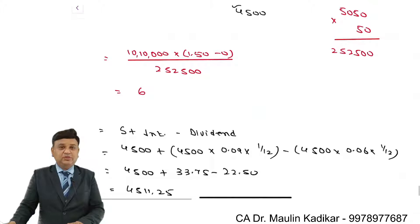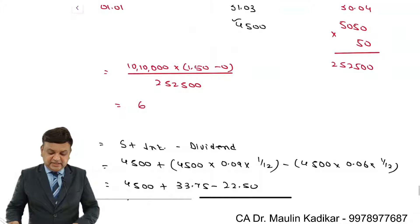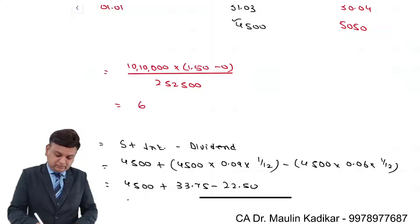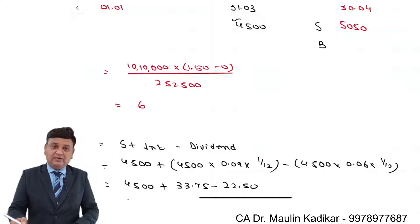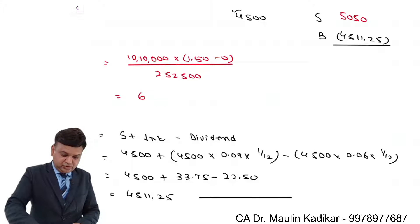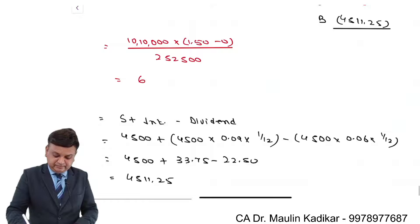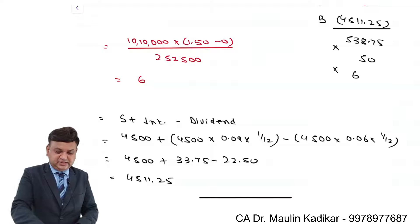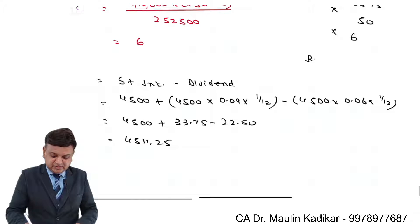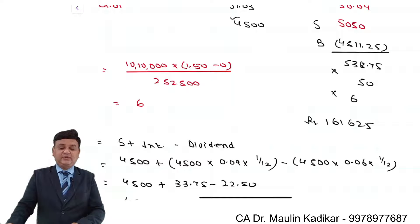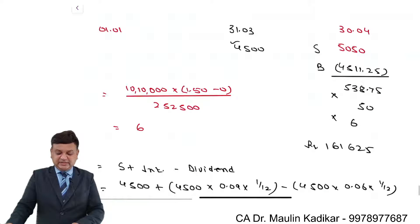The revised futures price is 4511.25. Since the initial transaction was a sale, we now need to buy to square up the contract. The difference between the sale price and the buy price is the profit or loss. The difference is 538.75, multiplied by the lot size of 50, multiplied by 6 contracts, which comes to ₹1,61,625. This is the profit or loss by squaring off the transaction at the end of 3 months.